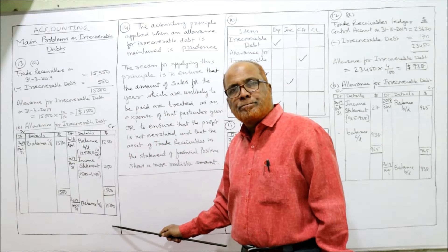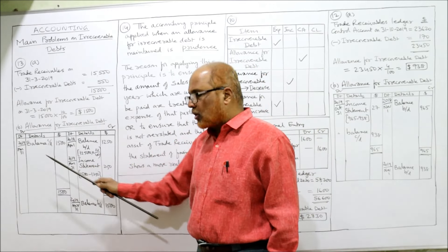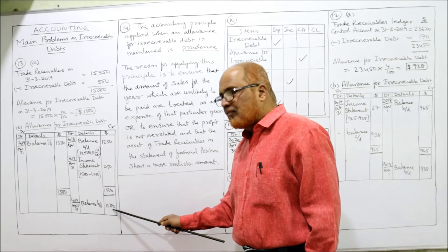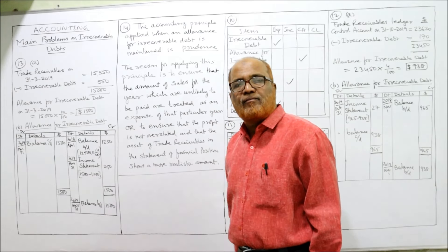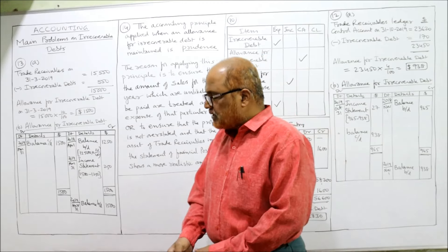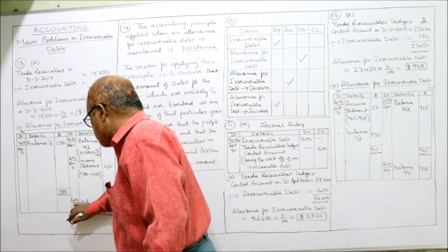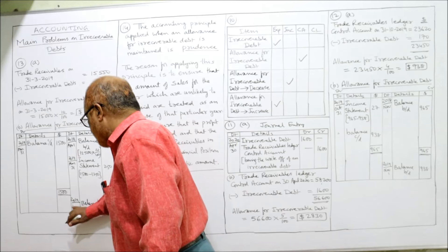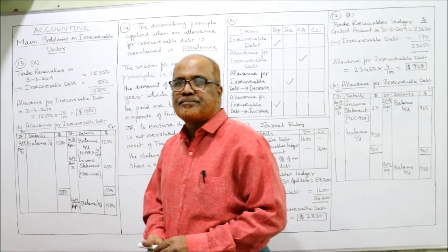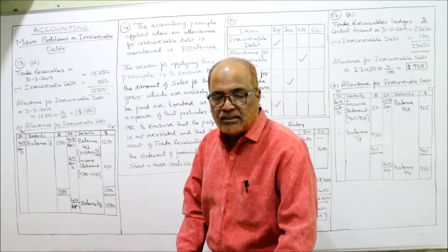The balance carried down was taken on the debit side; balance brought down is taken on the credit side — $1,500 as of 1st April 2019. This should be dated April 1st, not 31st March, because the next year has started. That completes problem number 13.